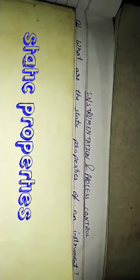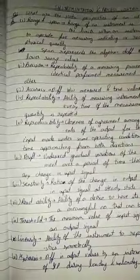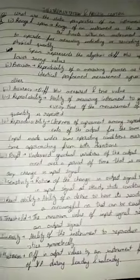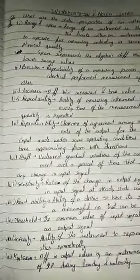The static properties of an instrument can be classified under the following headings: range and span, precision, accuracy, repeatability, reproducibility, drift, sensitivity, readability, threshold, linearity, and hysteresis. These are 11.